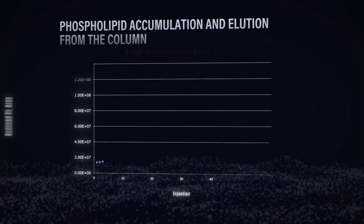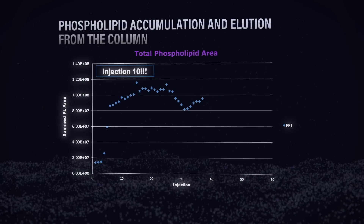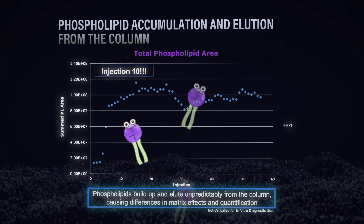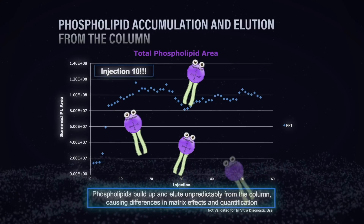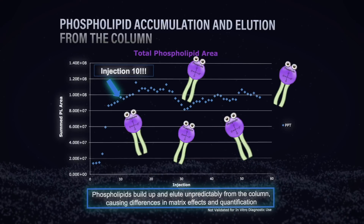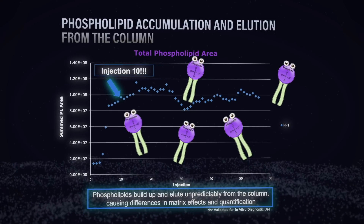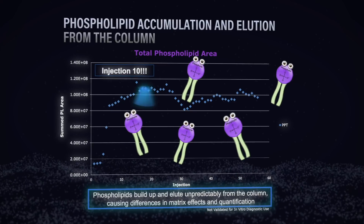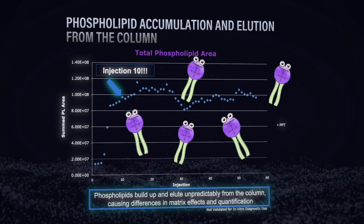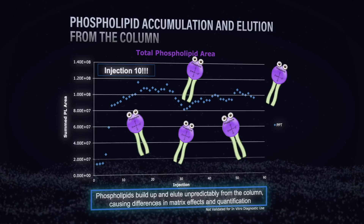Here we've done multiple injections, one after the other, monitoring how these phospholipids build up on the column. You can see really early on, up to maybe injection five or six, the phospholipid count coming off the column isn't that much. But over time, you can really see how they're coating the column, coming off the column, and not coming off at the same rate — giving you a lot of irreproducibility.